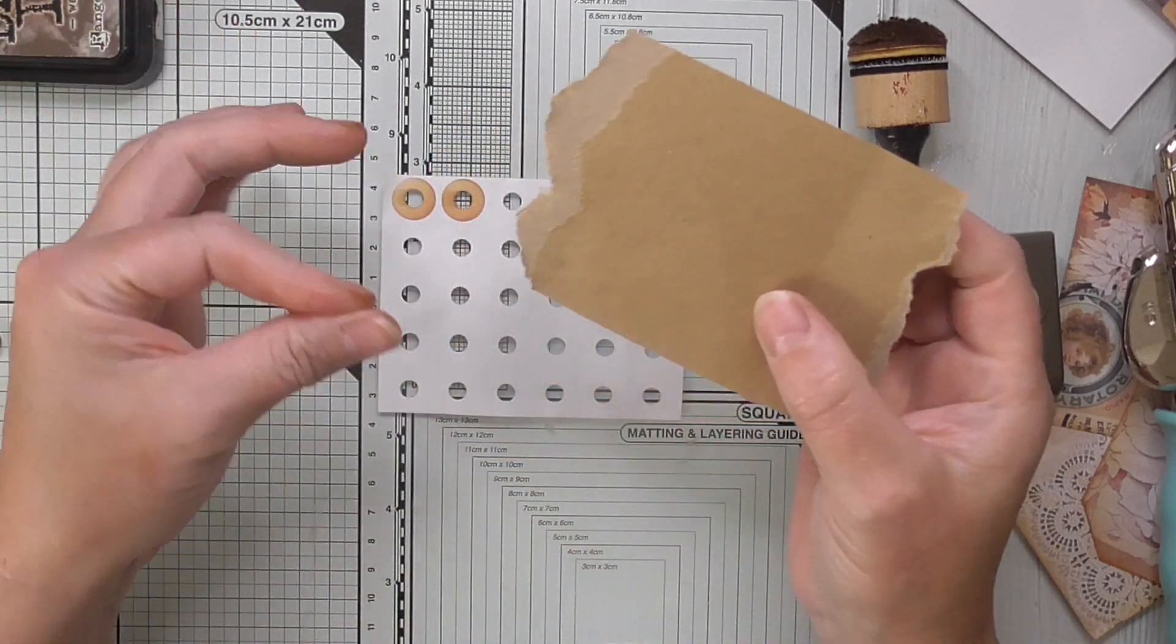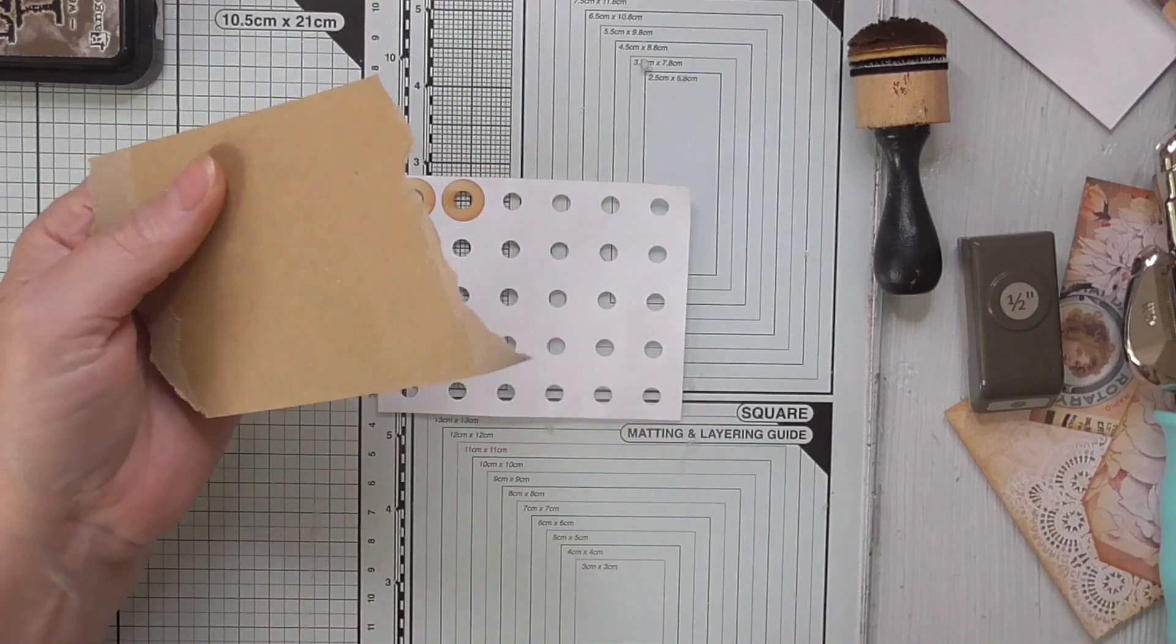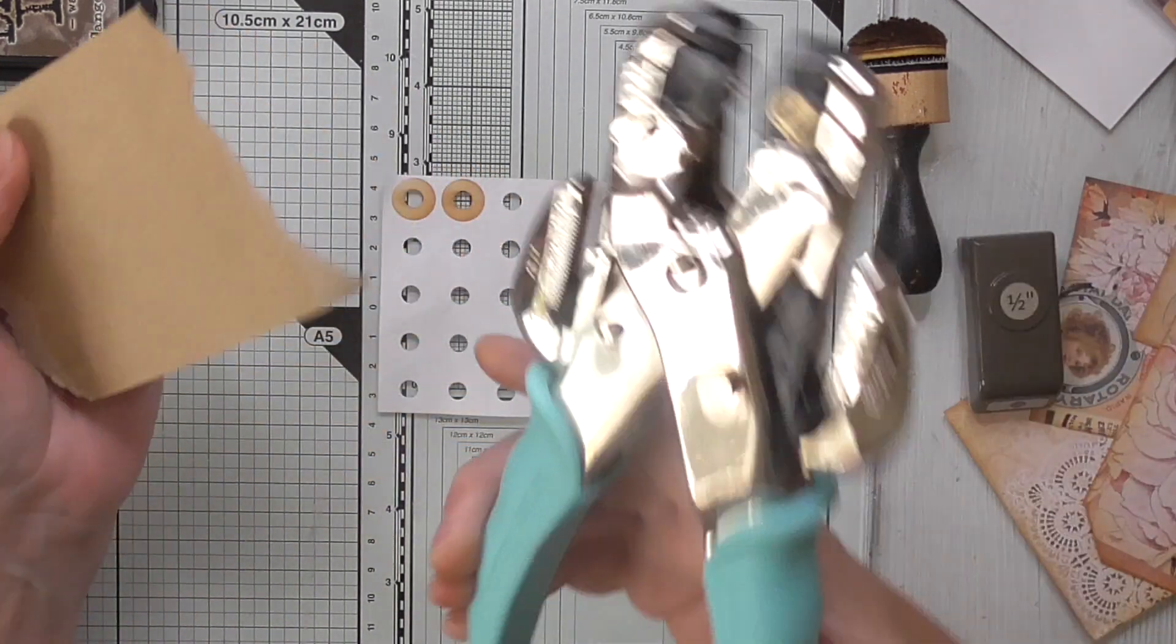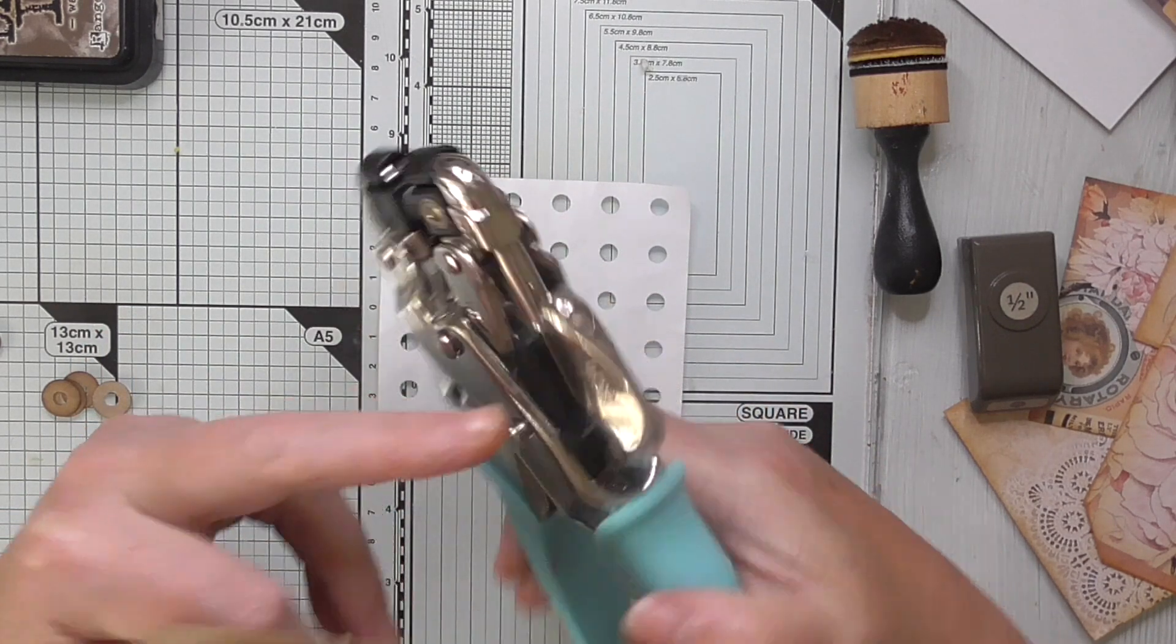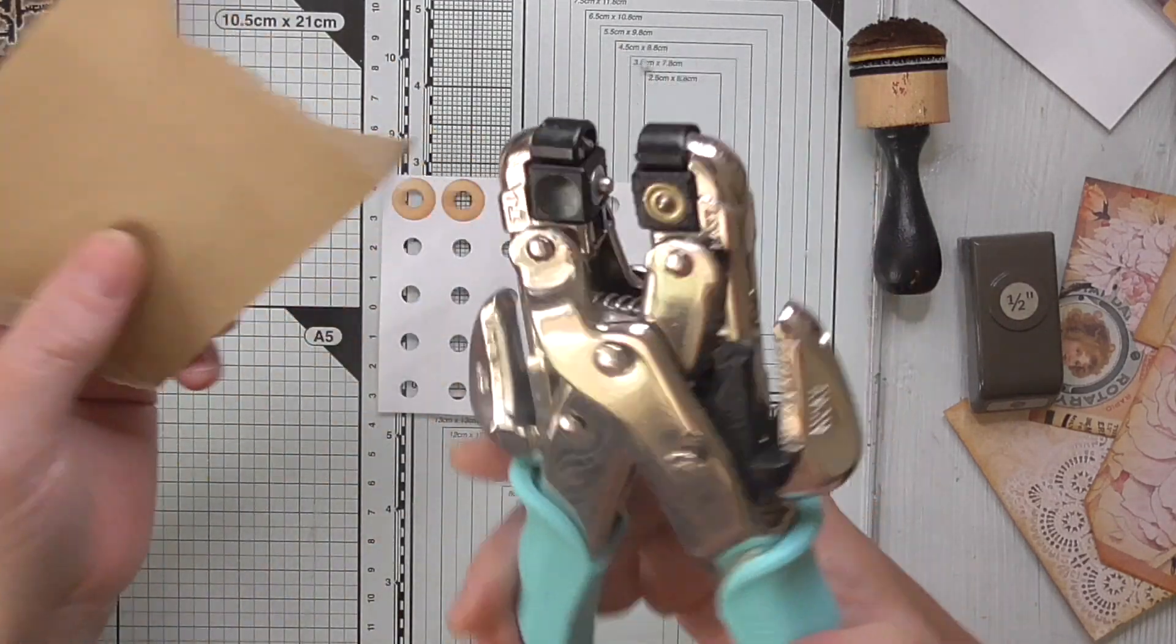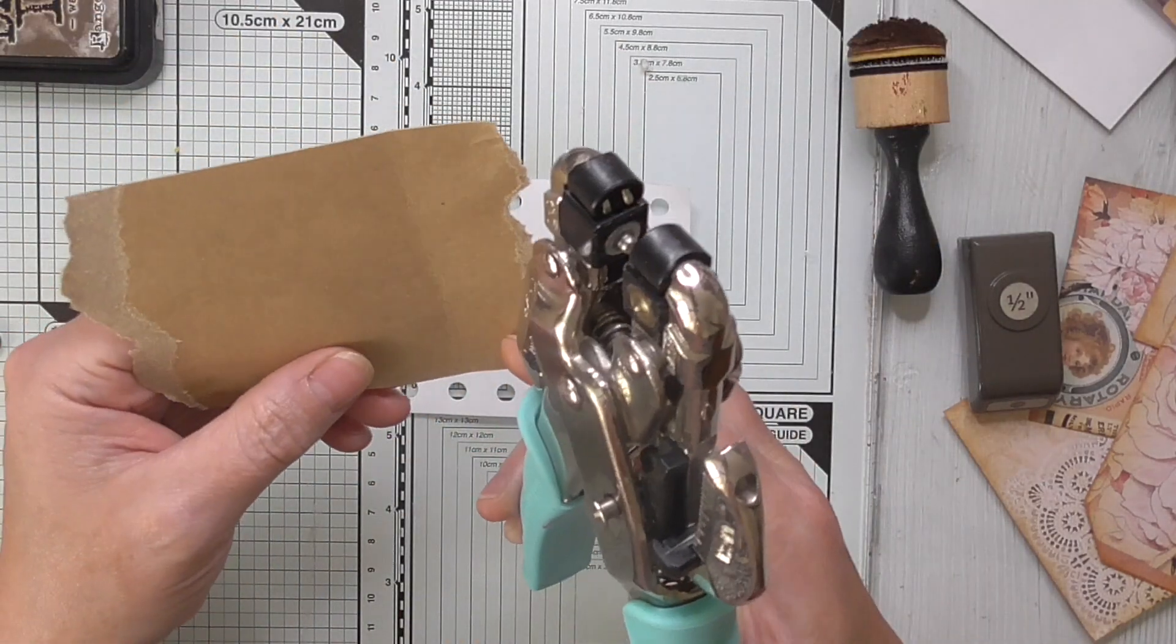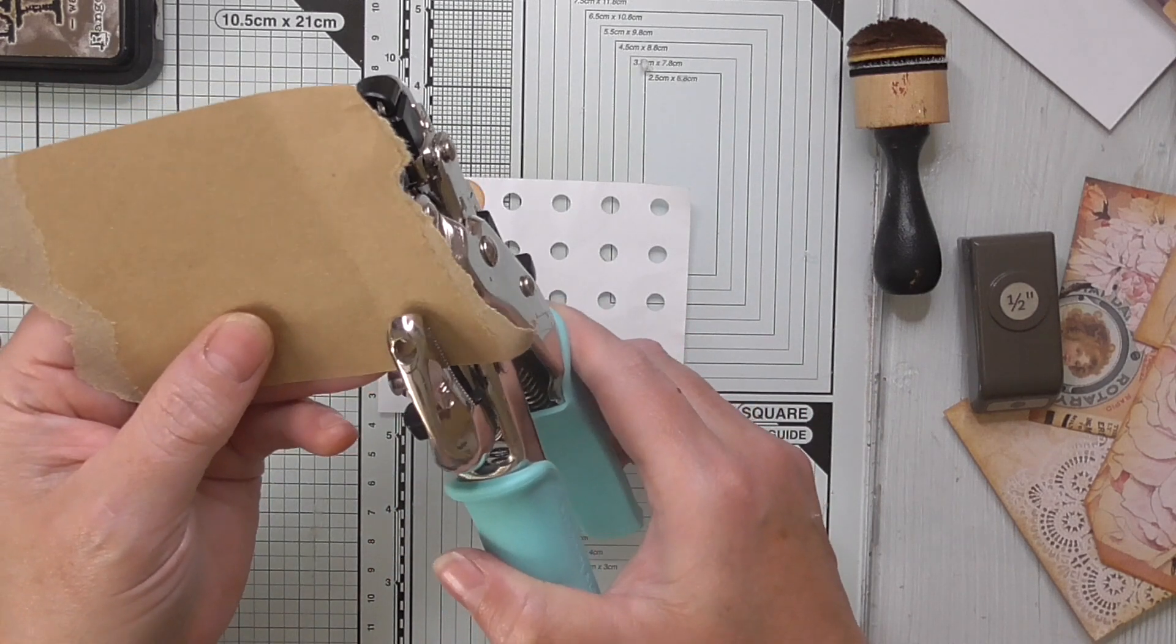If you've got a crop-a-dial, the largest hole on a crop-a-dial is 3/16th of an inch. If you don't have one of these, you might have a singular hole punch or an office hole punch. So what you want to do is punch some holes.